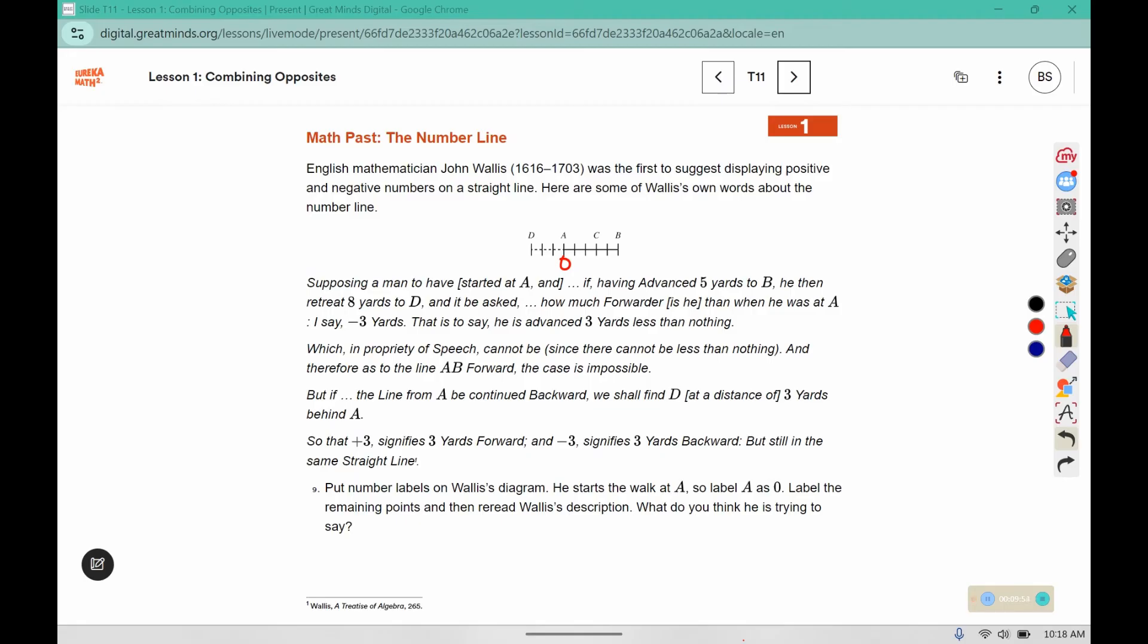Okay, so supposing a man starts at 0 and he advances 5 yards to B, so B should be 5. He then retreats 8 yards. So if we go back 8, 4, 3, 2, 1, 0, negative 1, negative 2, negative 3. And then this one should be 3.